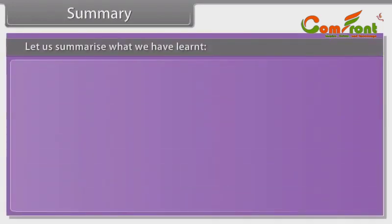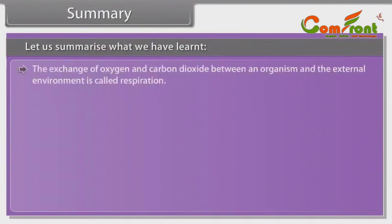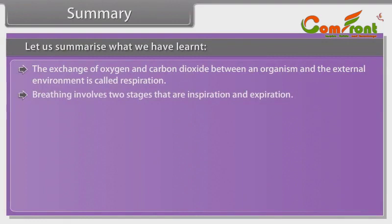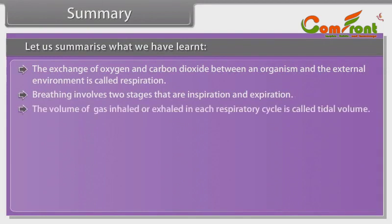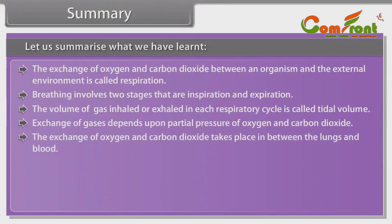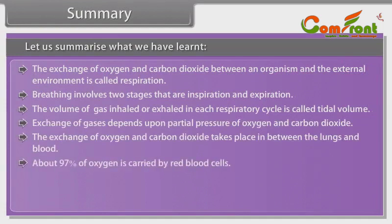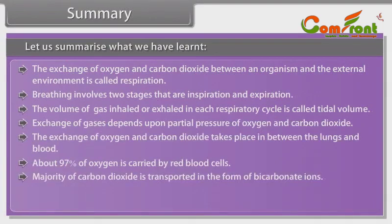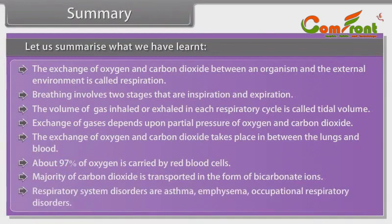Summary: The exchange of oxygen and carbon dioxide between an organism and the external environment is called respiration. Breathing involves two stages: inspiration and expiration. The volume of gas inhaled or exhaled in each respiratory cycle is called the tidal volume. Exchange of gases depends upon the partial pressure of oxygen and carbon dioxide. The exchange of oxygen and carbon dioxide takes place between the lungs and blood. About 97% of oxygen is carried by red blood cells. The majority of carbon dioxide is transported in the form of bicarbonate ions. Respiratory system disorders include asthma, emphysema, and occupational respiratory disorders.